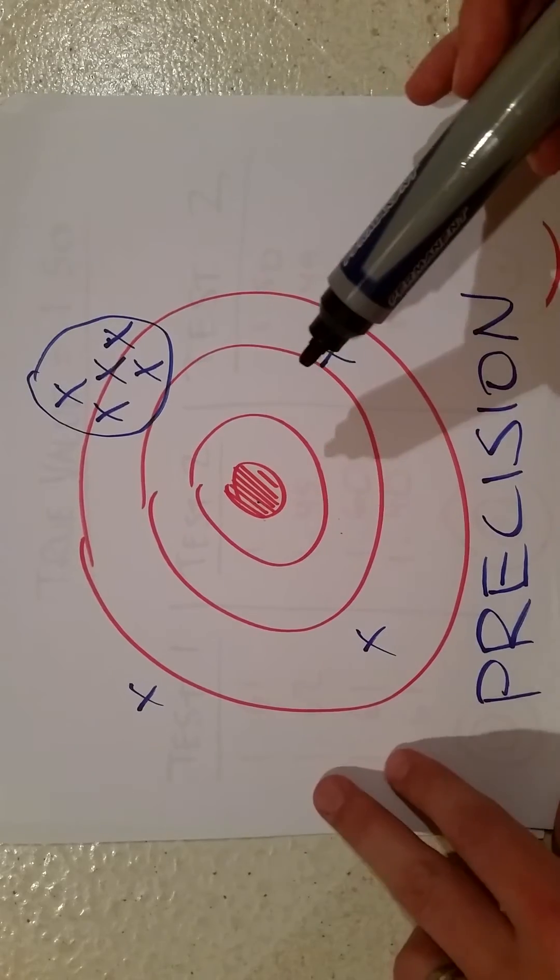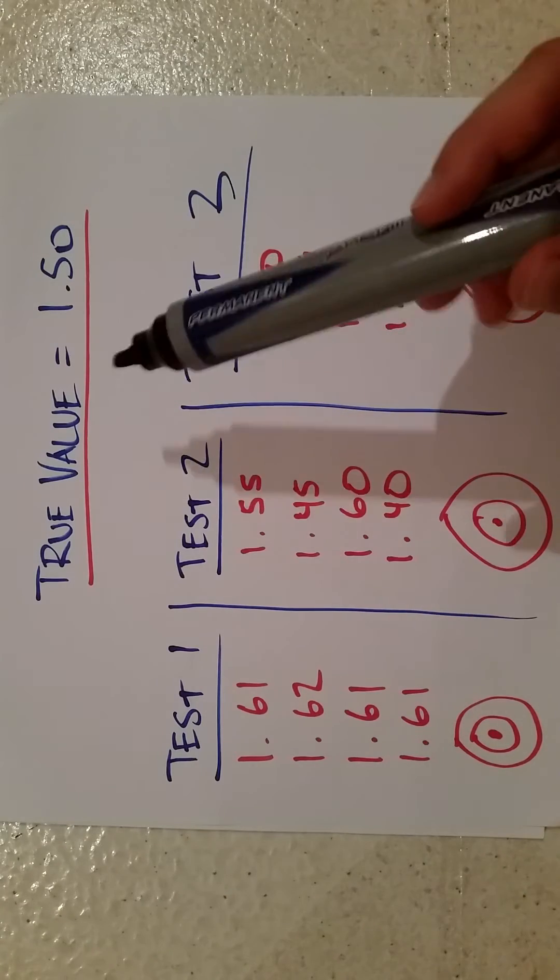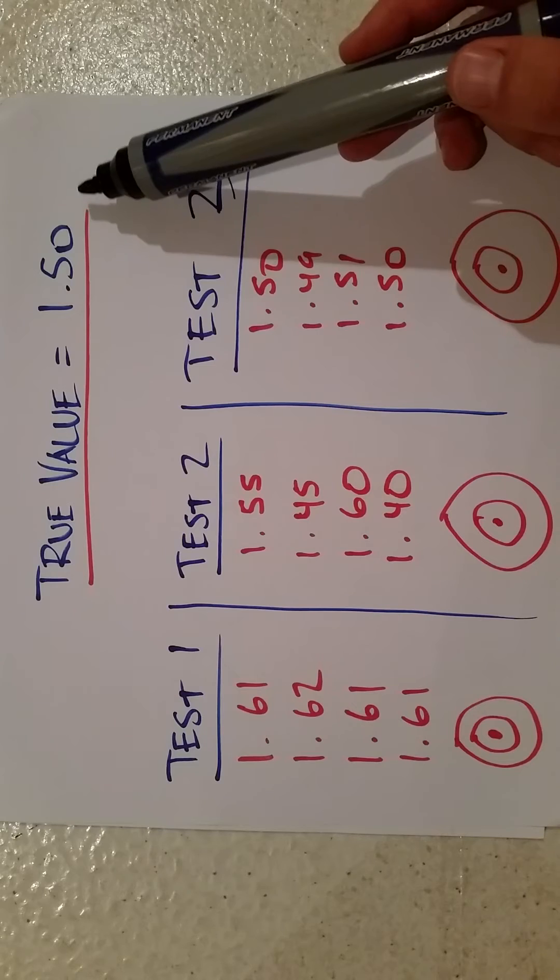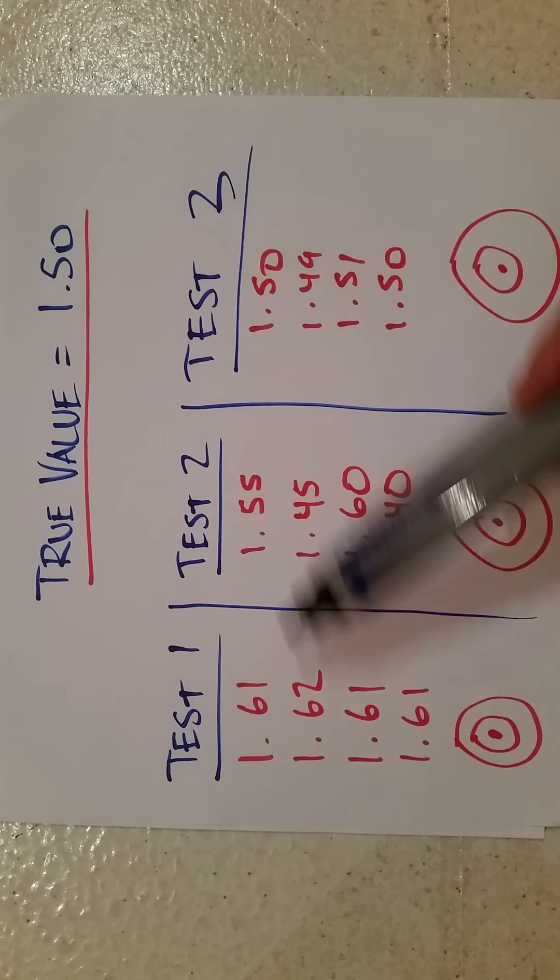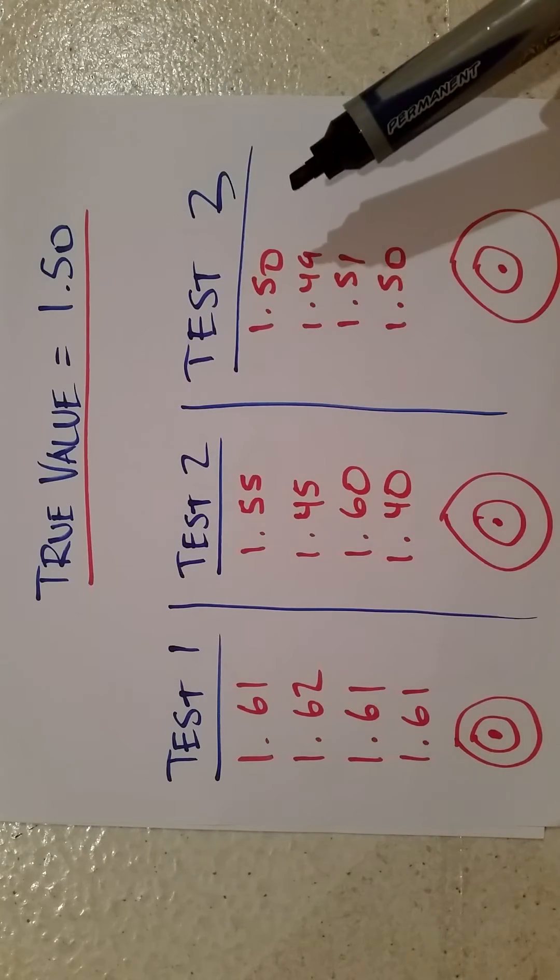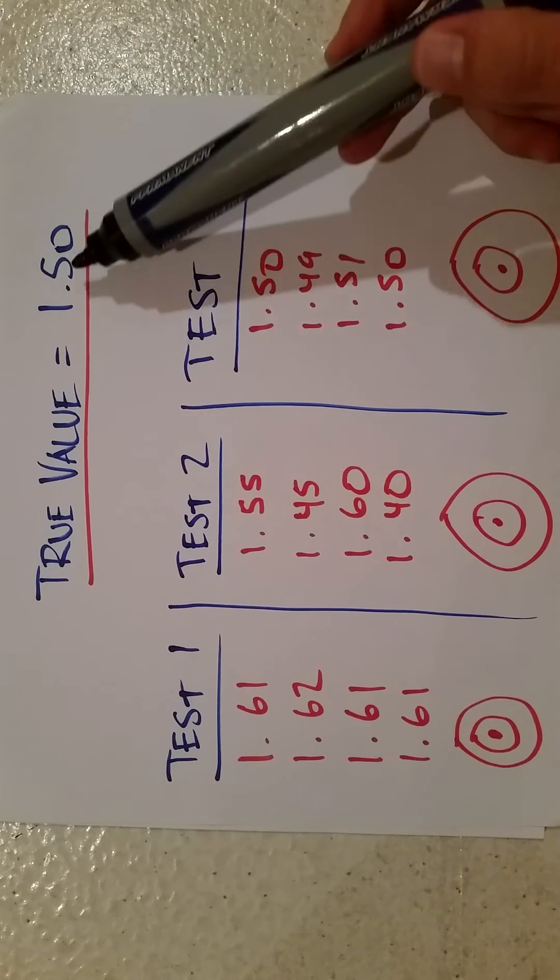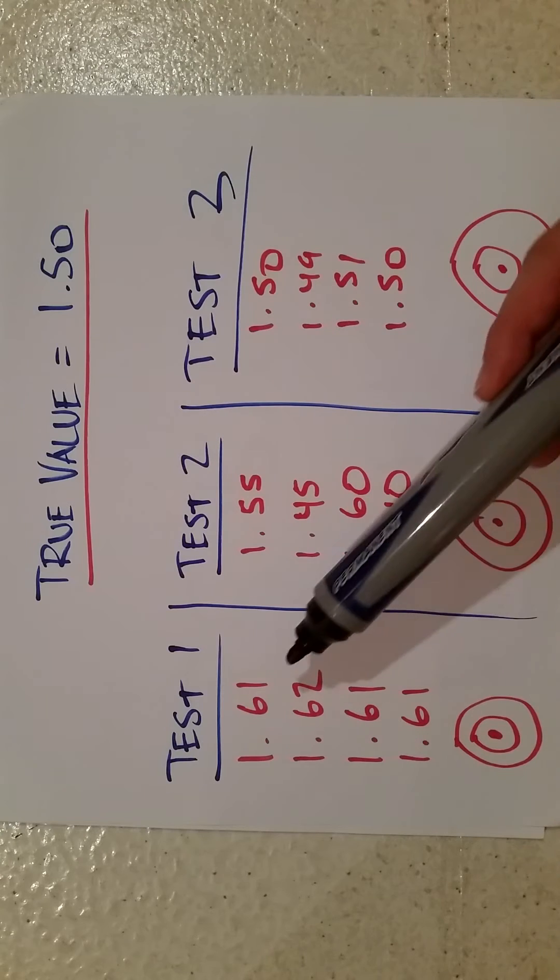Let's use one final example here to show you exactly what I mean. Let's say that there's a value of some chemical in your bloodstream that's 1.50. We know that to be the true accurate value, but we're looking at different tests that can tell us, maybe more cheaply, a good idea of what's going on in the blood. So let's say the true value is 1.50.